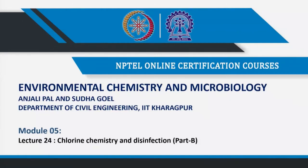This is my fifth module. In my first module I discussed acids, bases and salts. In the second module I discussed chemical equilibrium. In the third module I discussed chemical kinetics. In the fourth module I talked about catalysts. In this fifth module I will discuss chlorine chemistry and disinfection. I started in lecture 23; this is lecture 24, part B.